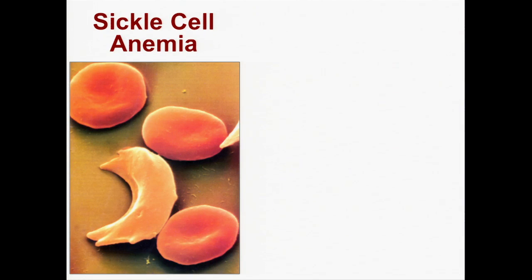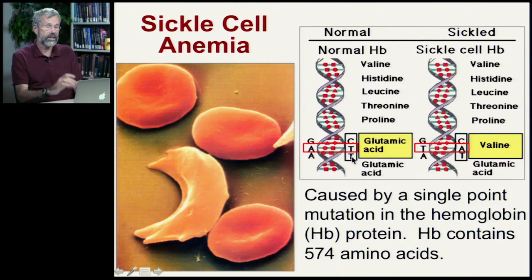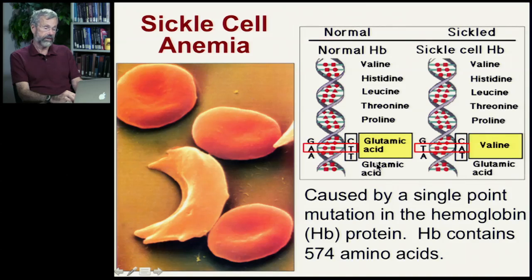There are some really significant substitution mutations that have profound consequences. One example we'll come back to several times in this course is sickle cell anemia. Instead of having healthy red blood cells that look like little hockey pucks, they are instead sickle shaped. This is caused by just a single point mutation in the hemoglobin protein. The hemoglobin protein is a long protein with 574 amino acids. The normal hemoglobin sequence in this region is valine, histidine, leucine, threonine, proline, glutamic acid, glutamic acid. But there's a mutation — instead of CTT, it's now CAT.